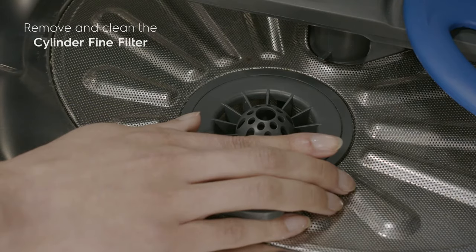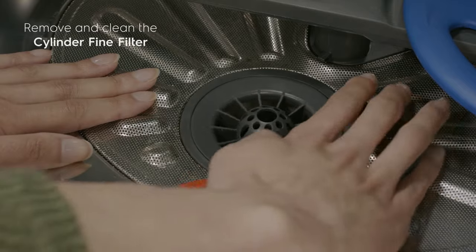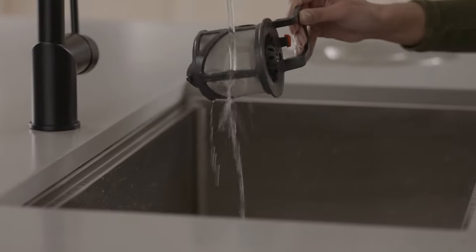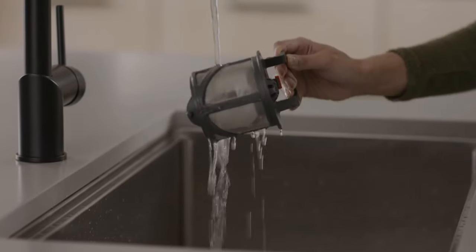To remove the cylinder fine filter, rotate it counterclockwise. Lift the filter out and empty any debris. Flush the filter by holding it under running water.